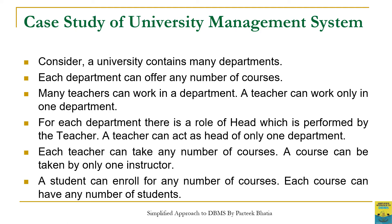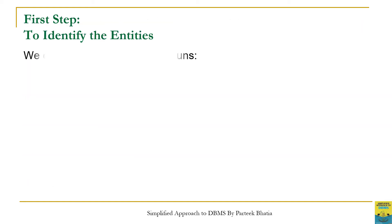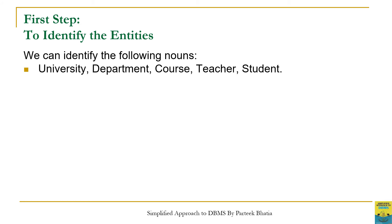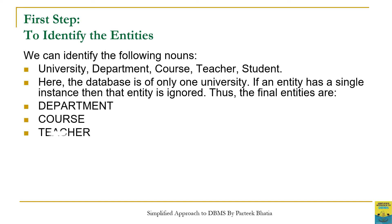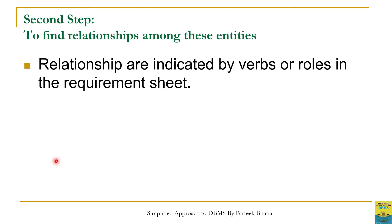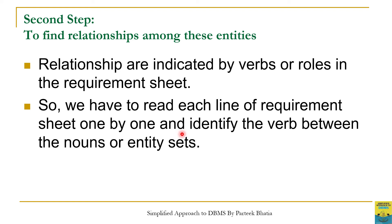As discussed in the previous session, we read each line of the requirements one by one and identified important nouns. There are five nouns in the requirement sheet, but since 'university' appears only once we ignored it, leaving four entity sets: department, course, teacher, and student. Now we have to find out the relationships among these entity sets, which are indicated by verbs or roles in the requirement sheet.